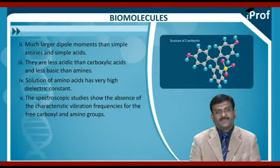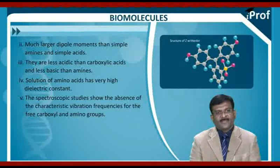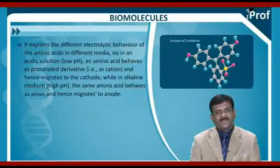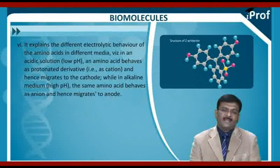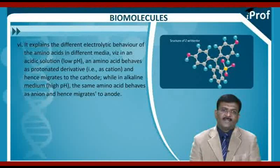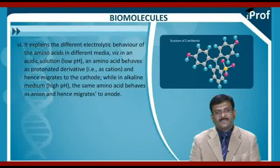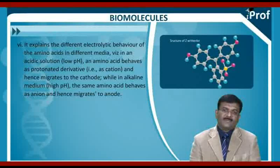Spectroscopic studies show the absence of the characteristic vibration frequencies for the free carboxyl and amino groups. This explains the different electrolytic behavior of amino acids in different media: in an acidic solution with low pH, amino acids behave as protonated derivatives — that is, as cations — and hence migrate to the cathode. In alkaline medium with high pH, the same amino acid behaves as an anion and hence migrates to the anode.